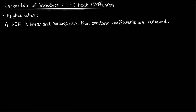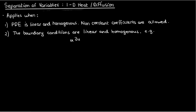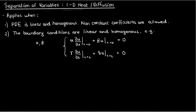Note that we're allowing the PDE to have non-constant coefficients, as long as it's linear. The second condition is that the boundary conditions have to be linear and homogeneous. For example, these two boundary conditions — one at x equals 0 and the other at x equals L, where alpha, beta, gamma, and delta are all constants — satisfy the linear and homogeneous requirement because they both equal zero.